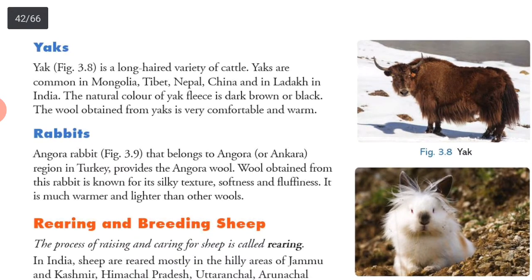Yak is a long-haired variety of cattle. Yaks are common in Mongolia, Tibet, Nepal, China and Ladakh in India. The natural color of yak fleece is dark brown or black. The wool obtained from yaks is very comfortable and warm. Angora rabbits that belong to Angora or Ankara, region in Turkey, provide Angora wool. Wool obtained from the rabbit is known for its silky texture, softness and fluffiness. It is much warmer and lighter than other wools.